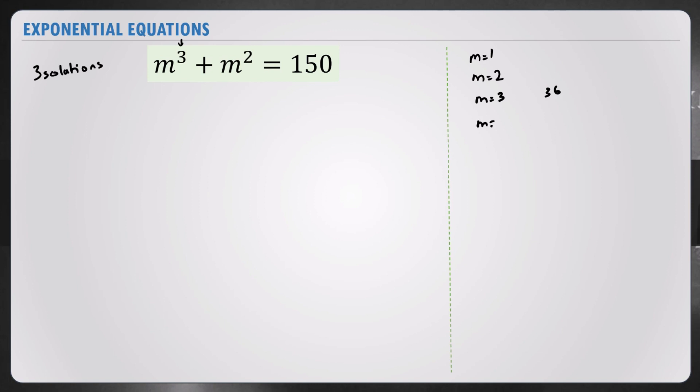m equals 4, let's try m equals 4, seems to be something close to 150. Let's see, 4 cubed plus 4 squared gives me 64 plus 16. That's not near 150.